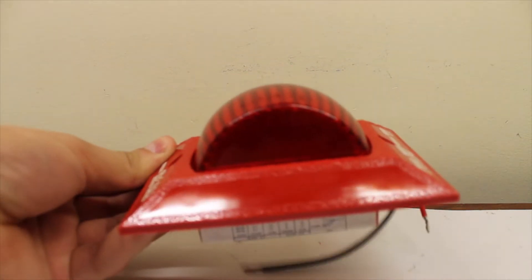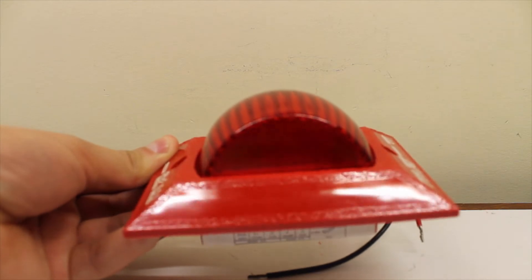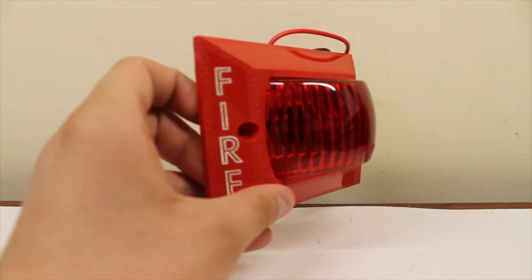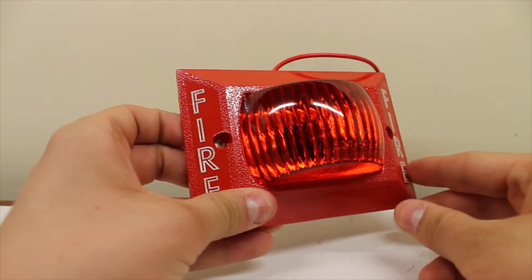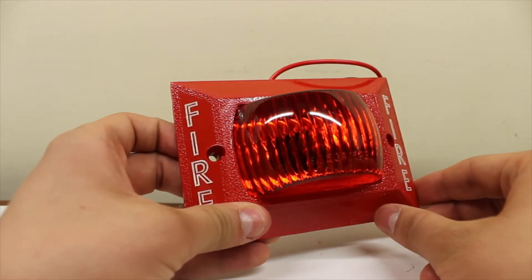Now, as you can see here, there's the red fire lens, the fire lettering on the side. There's a reflector in there, which you might be able to see. There we go.